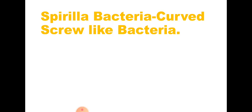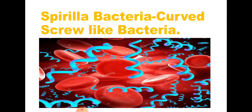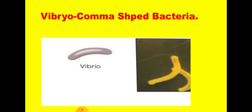The third type of bacteria is spirula. Spirula means curved skewer-like bacteria — these bacteria are curved in structure. Here is the image on the screen showing these curved bacteria. The last type is vibrio, which means comma-shaped bacteria. Vibrio bacteria look like a comma, as seen in the image on the screen.